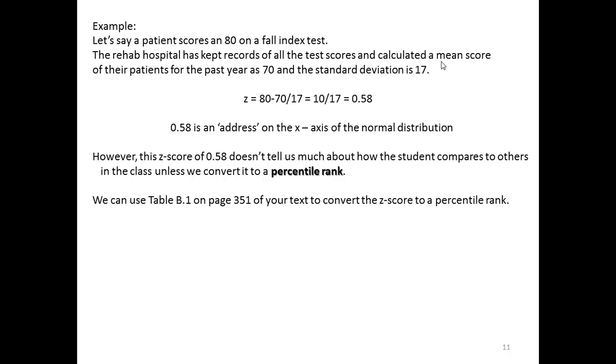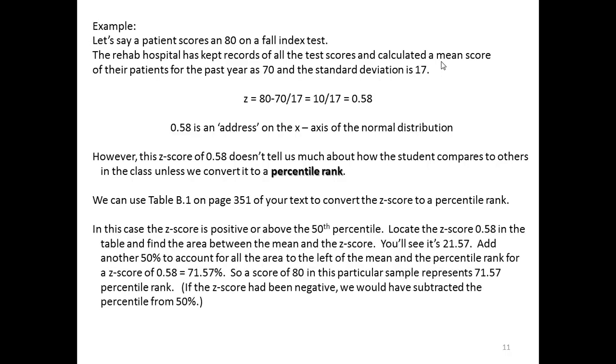We can use table B1 on page 351 of your book to convert the Z-score to a percentile rank. In this case the Z-score is positive. It's above the 50th percentile. So we locate the Z-score .58 in the table and find the area between the mean and the Z-score. You'll see it's 21.57. Add another 50% to account for all the area to the left of the mean and the percentile rank for a Z-score of .58 is 71.57%.